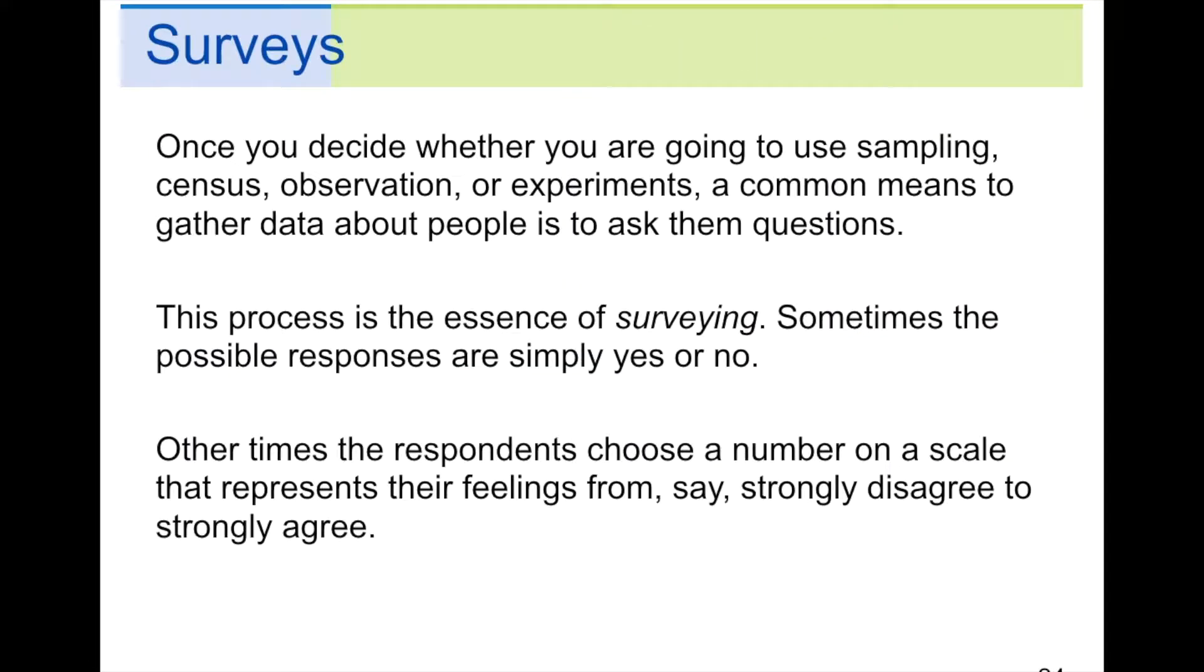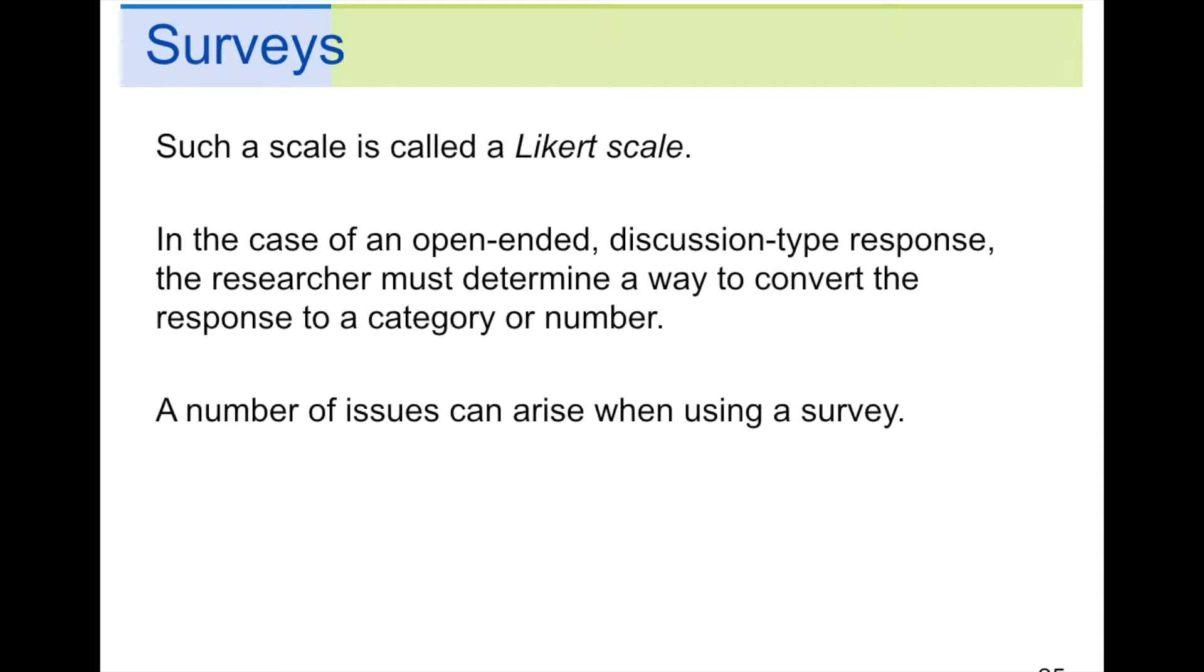Surveys. Once you decide whether you're going to use sampling, census, observation, or experiments, a common means to gather data about people is to ask them questions. This process is the essence of surveying. Sometimes the possible responses are simply yes or no. Other times, the respondents choose a number on a scale that represents their feelings from, say, strongly disagree to strongly agree. Such a scale is called a Likert scale. In the case of an open-ended discussion-type response, the researcher must determine a way to convert the response to a category or number. A number of issues can arise when using a survey.